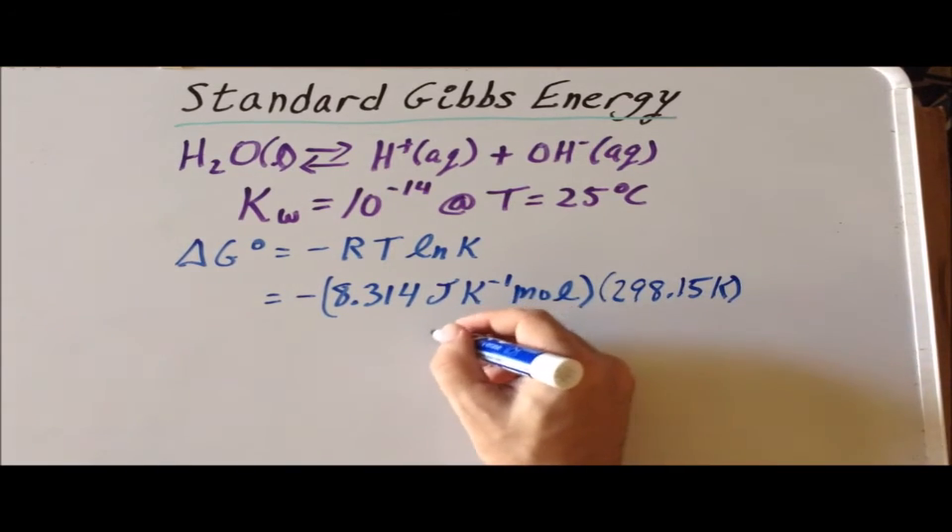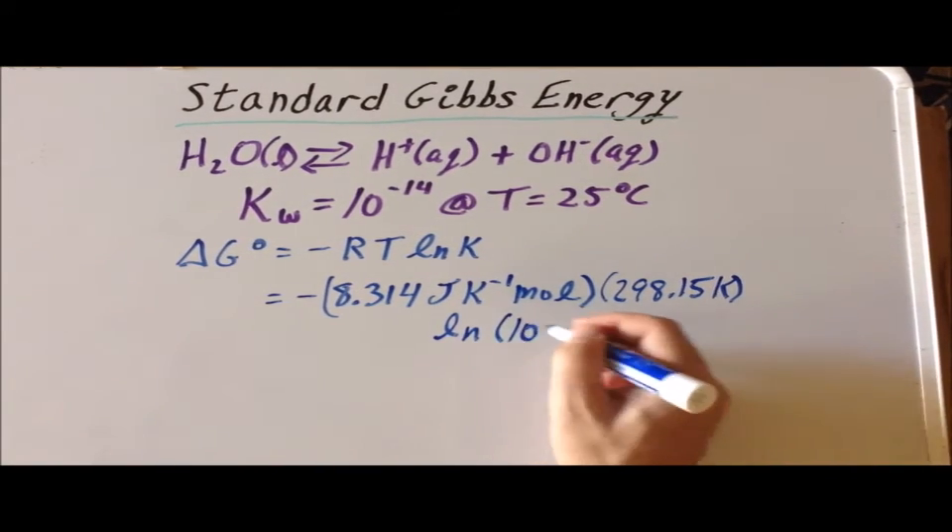In thermodynamics, we always have to convert temperatures in Celsius to temperatures in Kelvin. And now, we have the natural log of the equilibrium constant, which is 10 to the minus 14th power.